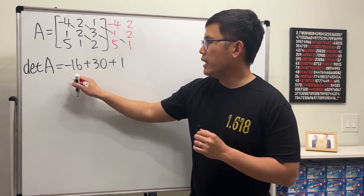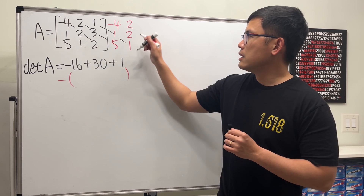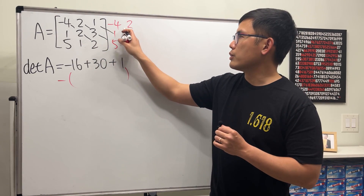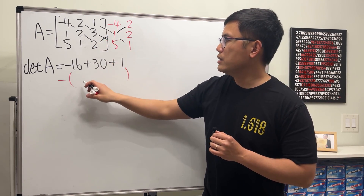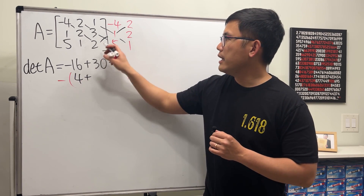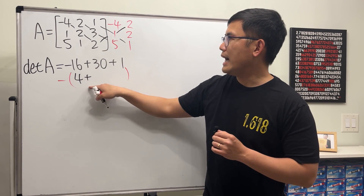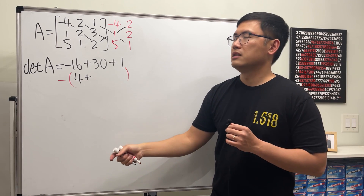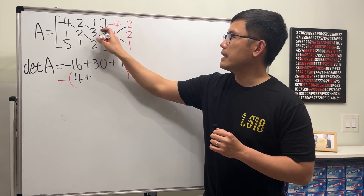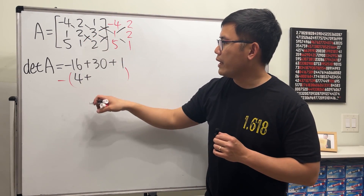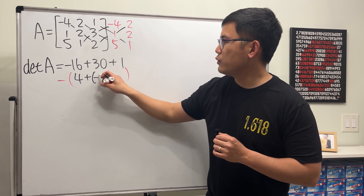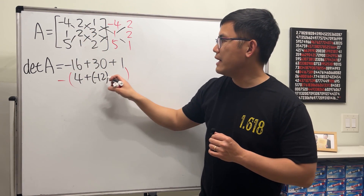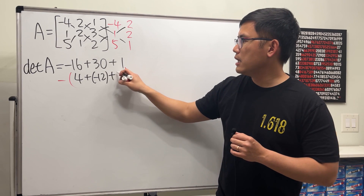Then we are going to subtract the same thing going the other way. So 2 times 1 times 2 is 4, and then subtracting the next one: negative 4 times 3 times 1 is negative 12, and lastly 1 times 2 times 5 is 10.